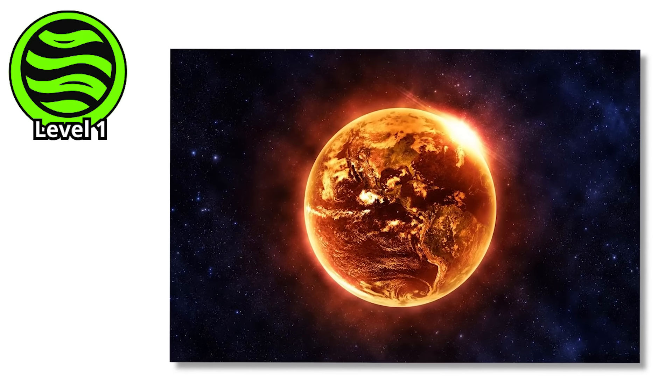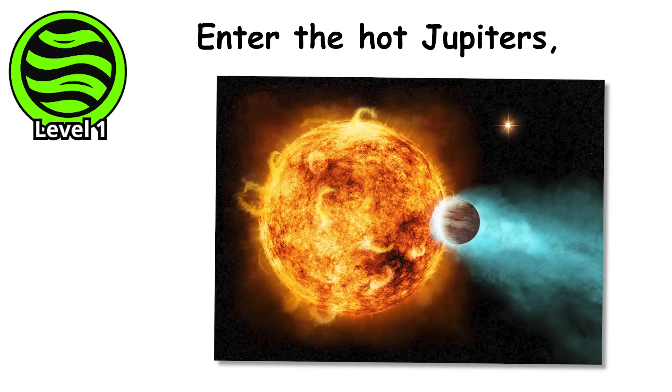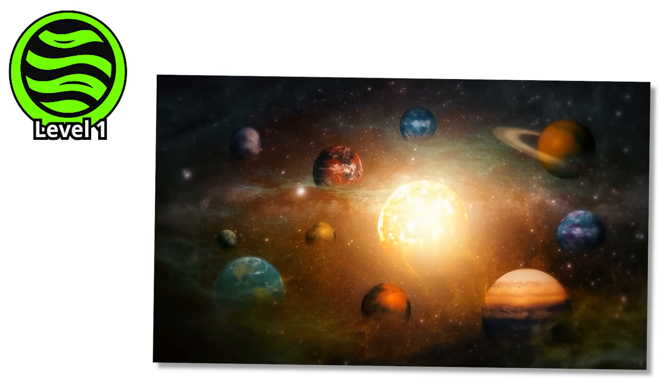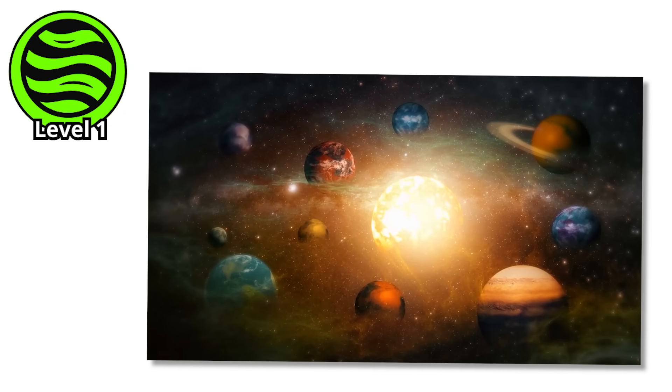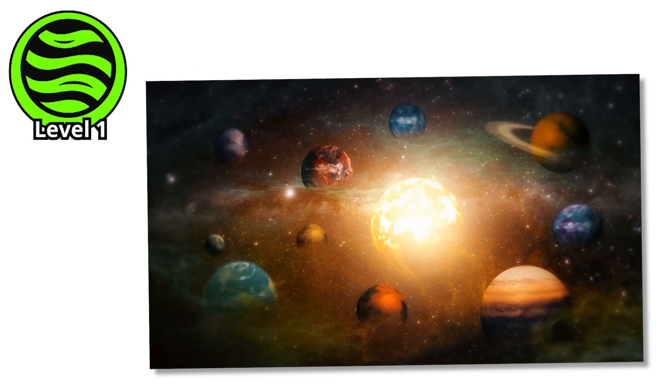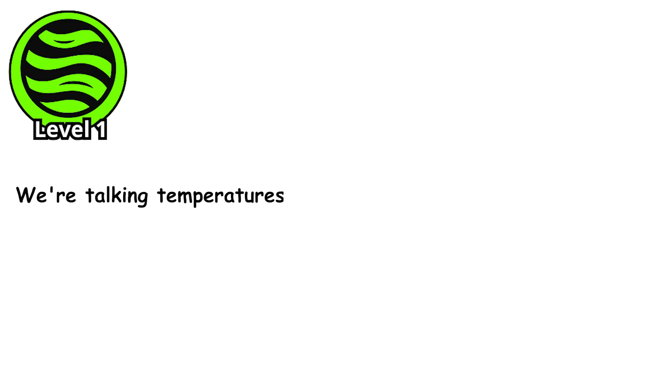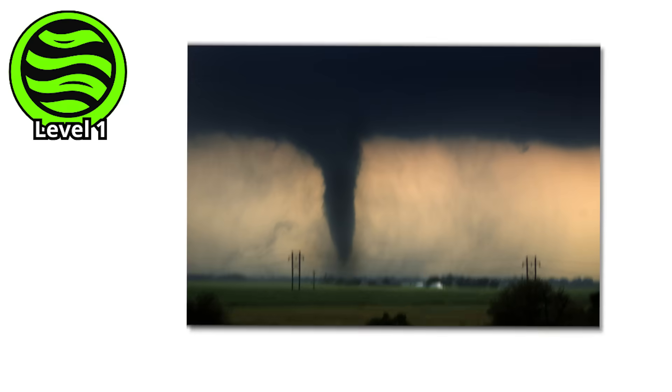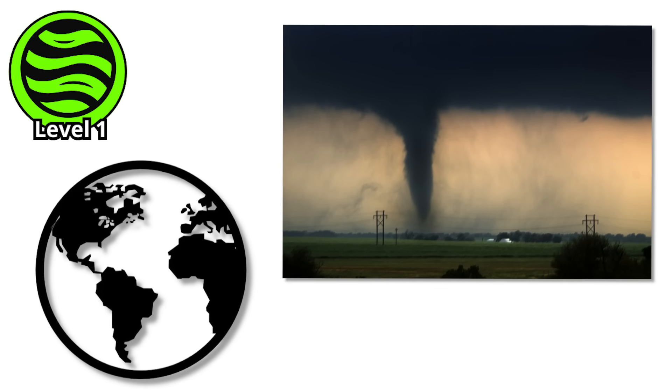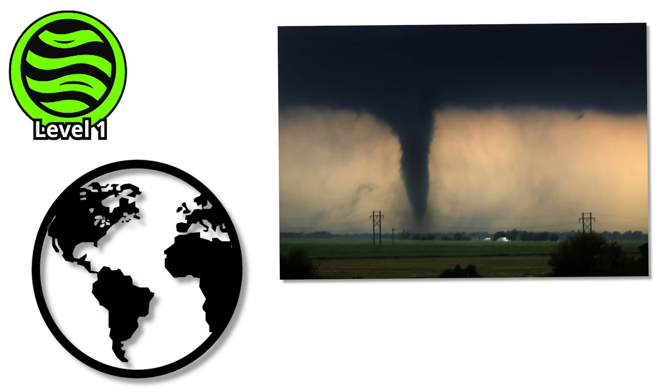But Venus is just warming up. Enter the hot Jupiters, and suddenly Venus looks like a pleasant vacation spot. These are gas giants the size of Jupiter that somehow ended up orbiting closer to their stars than Mercury orbits our sun. We're talking temperatures exceeding 3,000 degrees Fahrenheit, winds screaming at thousands of miles per hour, and weather systems so violent they make Earth's hurricanes look like a gentle summer breeze.